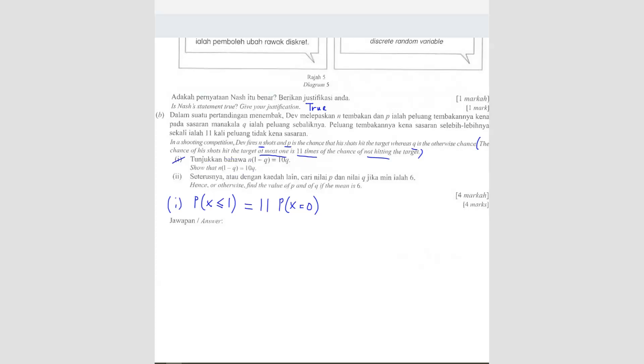So we're going to solve this. So P(X ≤ 1). So that means you're going to find for P(X = 0) and also P(X = 1). Equals to 11 P(X = 0). Now, so you've got P(X = 0) here. Here you've got P(X = 0). So you can put them together.